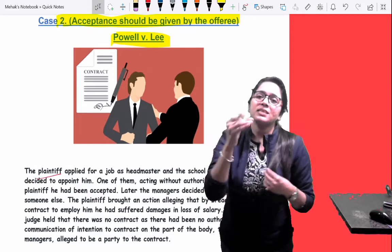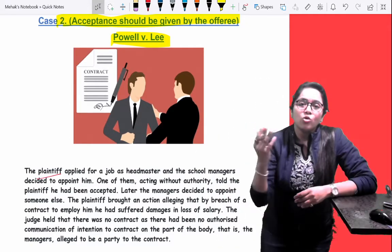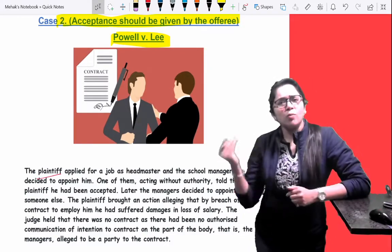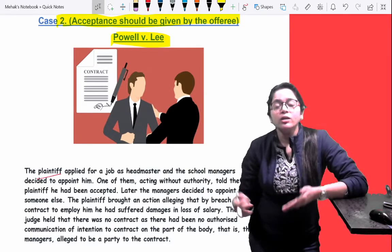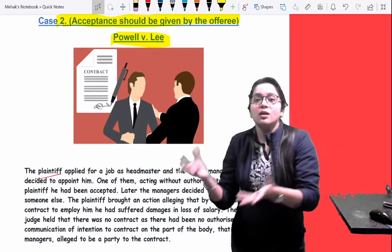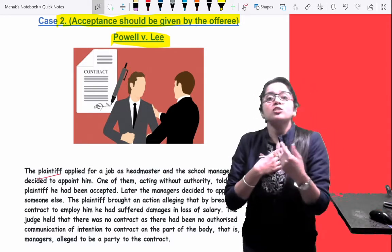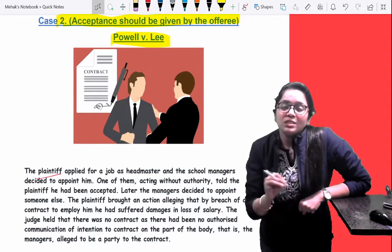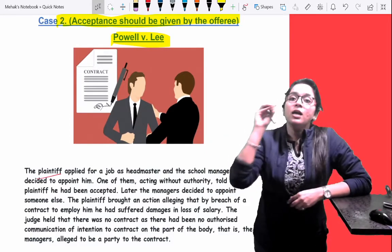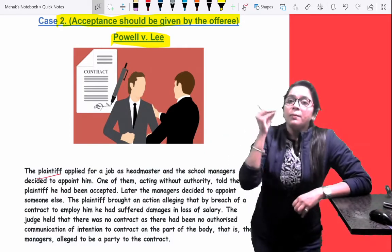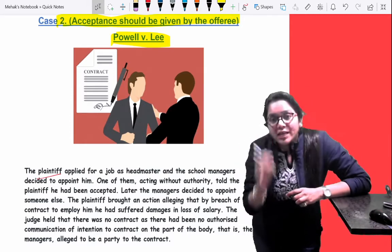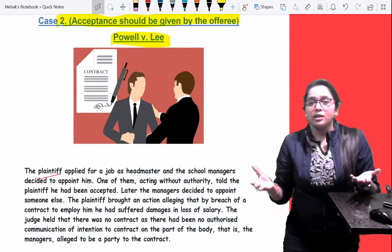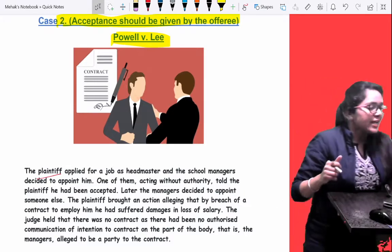But his friend came and told him that he was selected, although there was no authorized communication. He thought he was selected. Later on, that department selected someone else. Then he filed the case, saying if you have selected me one time, how can you do that? The court said that the acceptance you received was from a third party, not from the offeror. Because acceptance should be given by the offeror only. Hence, the acceptance has not been given to you yet. It was given by a third party who was not authorized to do so.